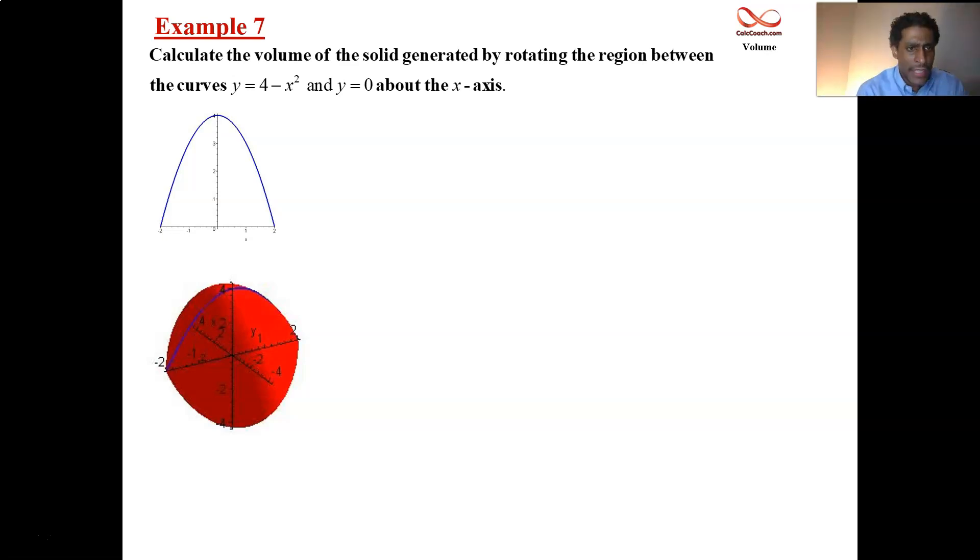So here we have the task at hand to calculate the volume of the solid that's generated by rotating the region between the curves y equals 4 minus x squared and y equals 0. This is rotated about the x-axis. And so, how do we go about doing that?